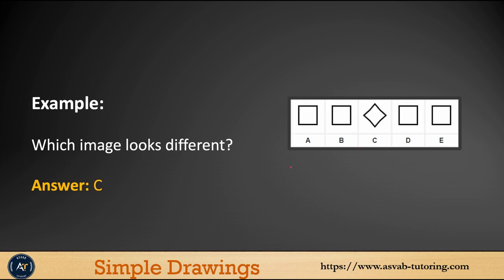The next question is: which image looks different? You could see A, B, C, D, and E — all of them are squares, but all of them are the same orientation except letter C. The correct answer is C.